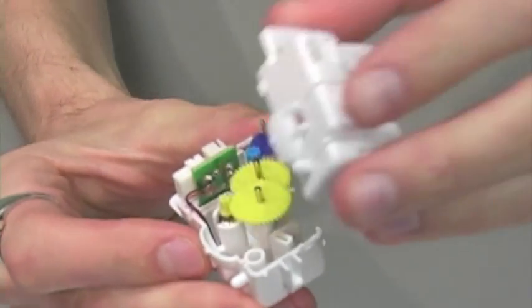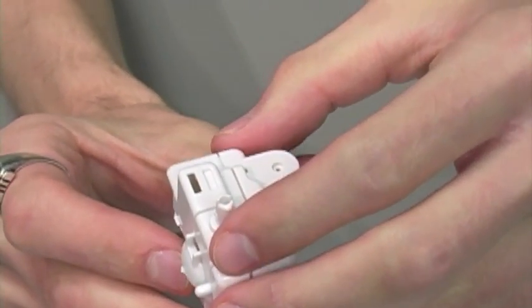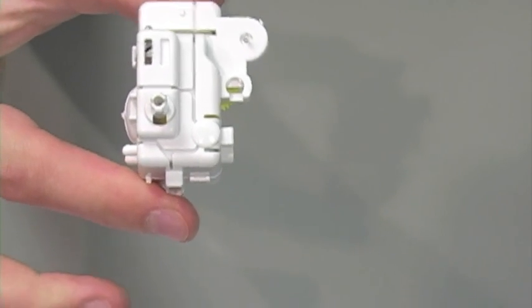And now for step 6 you're going to find part A2 and close up your gearbox. Step 6 complete.